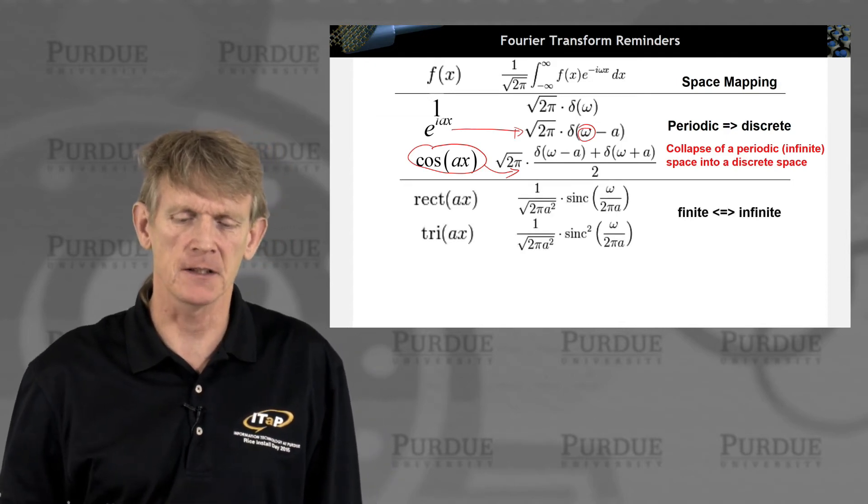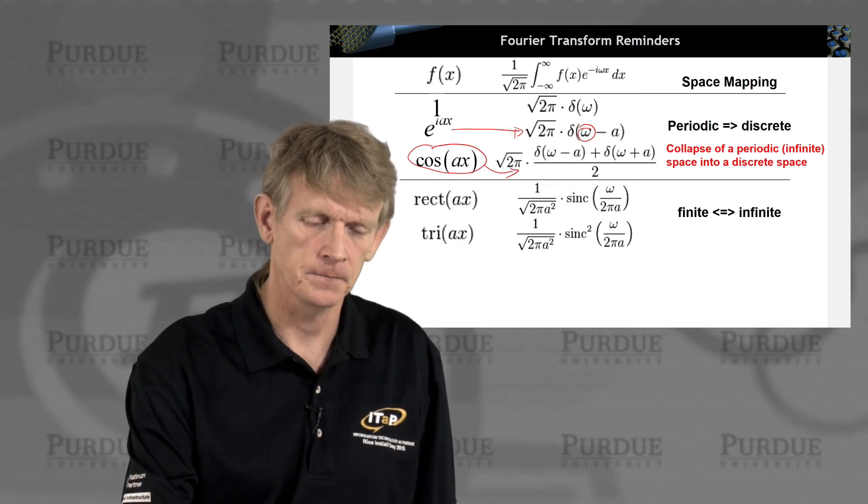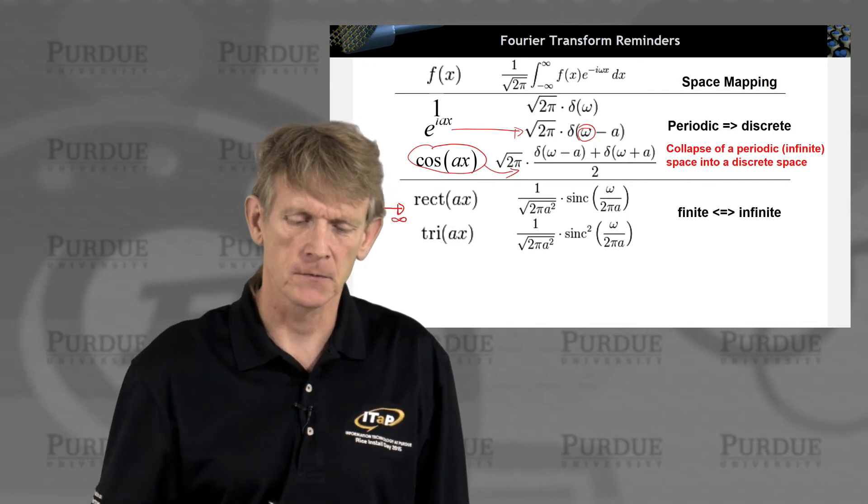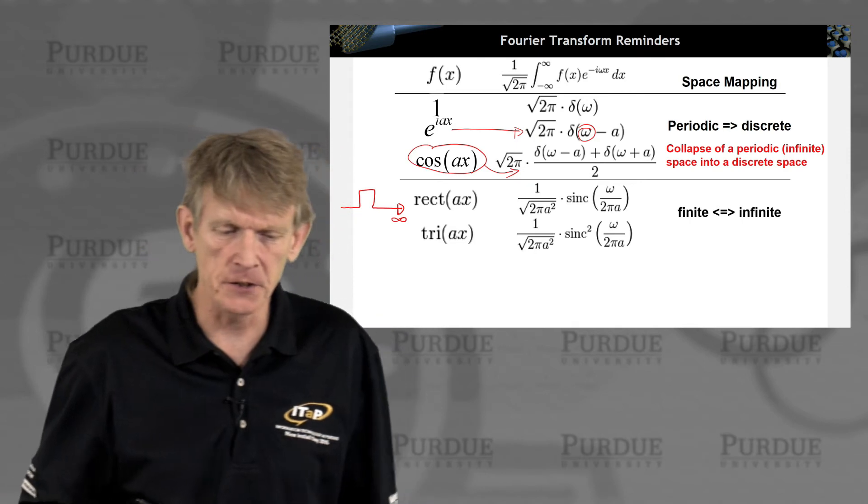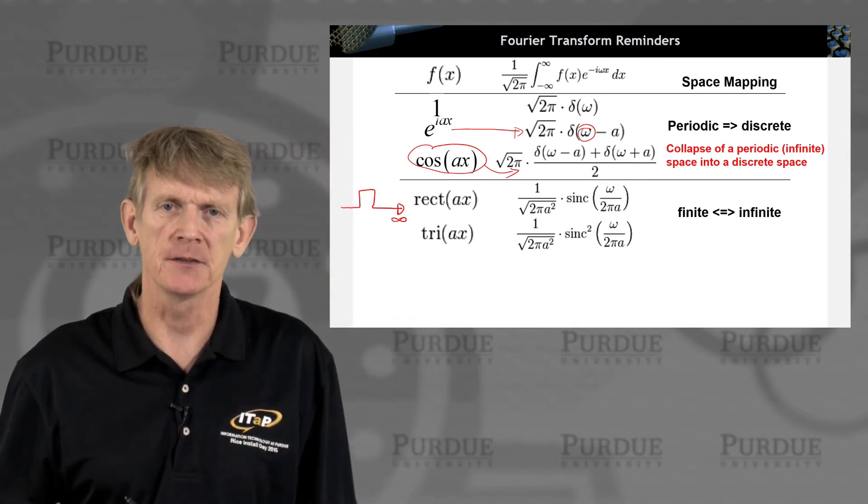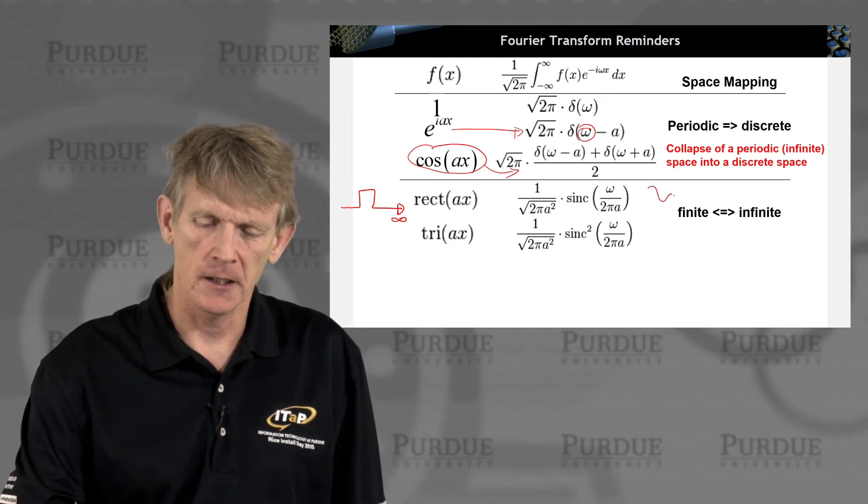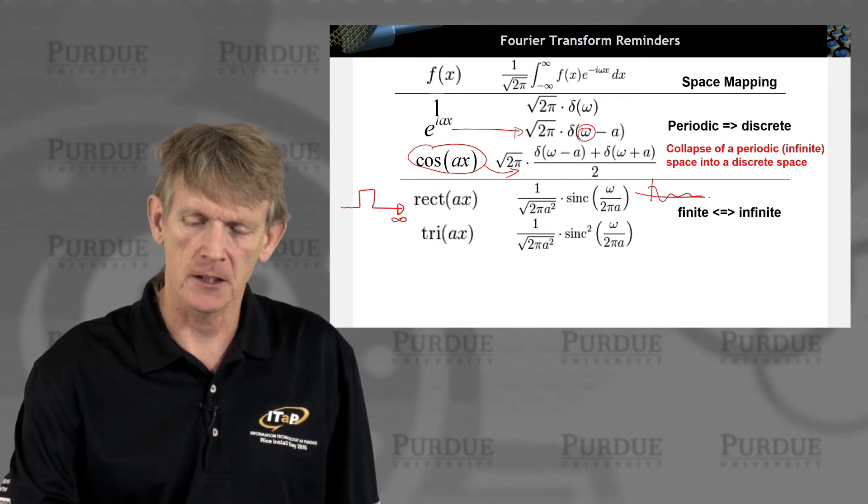And a constant maps into a delta function. If you take functions like these, the rectangular function that is finite in space, like this, where the x-axis goes to infinity, but it has a single step-like feature, you map that in Fourier space into a sinc function, which is the sinusoidal decay function that looks like this, in my bad way of sketching.